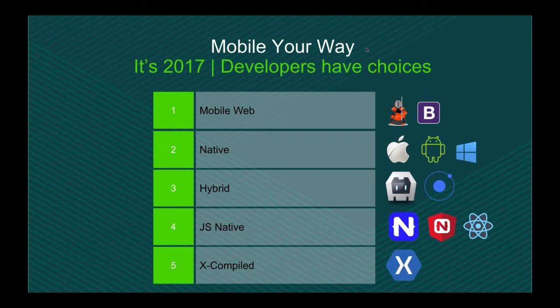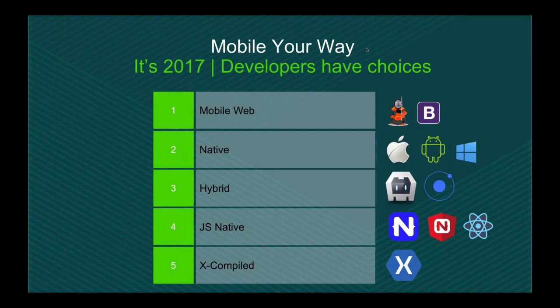It's 2017, and we have a lot of choice as developers in how we build mobile apps. I'll run through some broad strategies and then we'll jump into Xamarin. The lowest-hanging fruit is mobile web — if you have a website today, there's no reason it can't work nicely on a mobile device. There are frameworks like Twitter Bootstrap and Kendo UI to help. You can also take mobile web to the extreme with progressive web apps, which Google is pushing strongly.